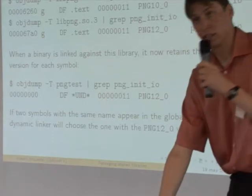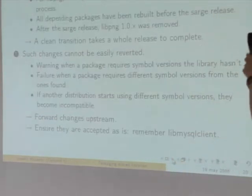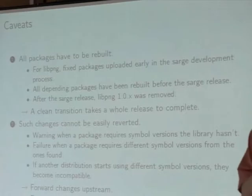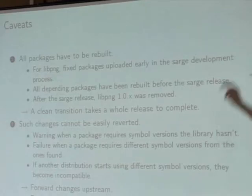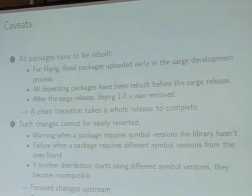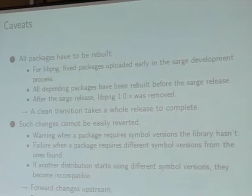To benefit from versioned symbols, all packages have to be rebuilt. For libpng, which was one of the largest such transitions: fixed packages with version symbols were uploaded right after the Woody release. All packages depending on libpng were rebuilt before Sarge was released. In the Sarge release we still had the two library versions, but with all binaries using these version symbols. After the Sarge release we could remove the older version, rebuild all applications that used to link with that version against the new version, and everything went smoothly — not a single bug happened.